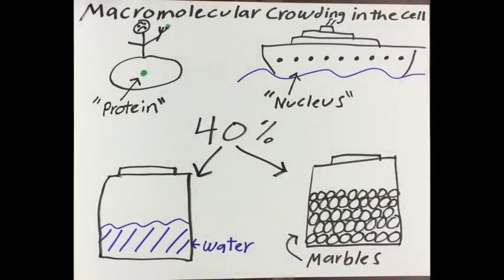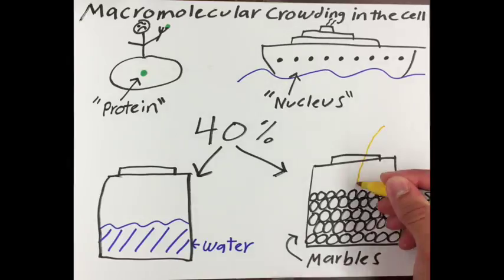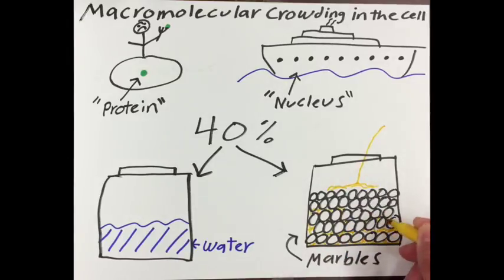And if we were to fill the mason jar all the way with marbles, we would only fill about 64% of the jar's volume. If we wanted, we could even pour sand into our mason jar to occupy the space around the marbles. This would be a good example of how differently sized objects actually exist within your cells.